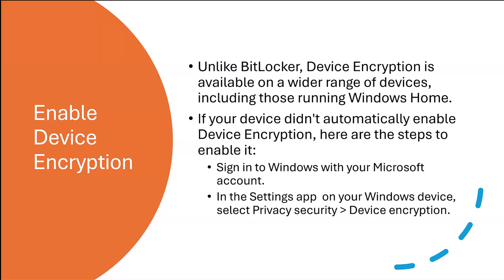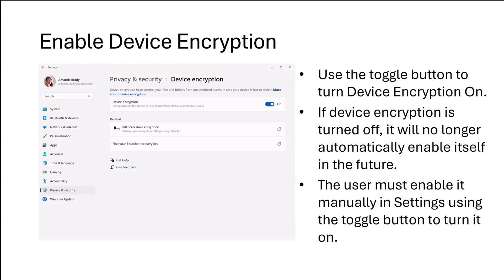Enable device encryption. Unlike BitLocker, device encryption is available on a wide range of devices, including those running Windows Home. If your device didn't automatically enable device encryption, here are the steps: sign in to Windows with your Microsoft account, open the Settings app, select Privacy and Security, then Device Encryption. You should see a toggle button on the right to turn device encryption on. If device encryption is turned off, it will no longer automatically enable itself in the future — you must enable it manually by going back to that screen and using the toggle button.